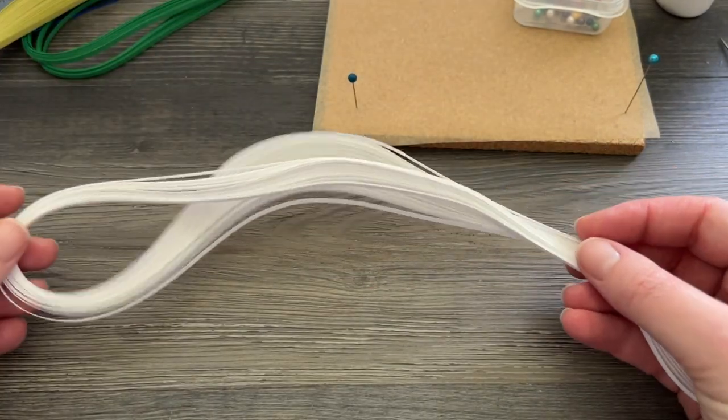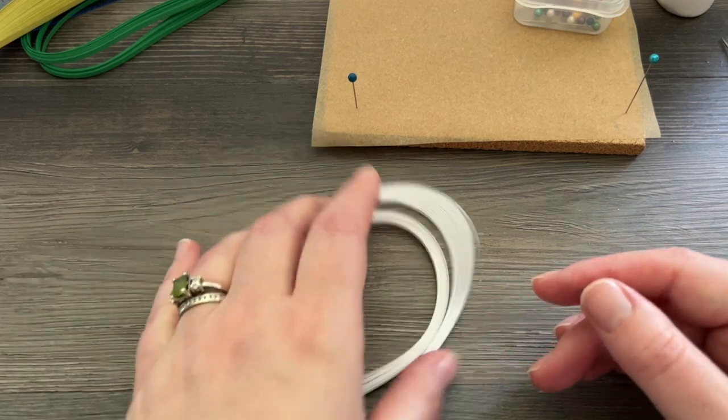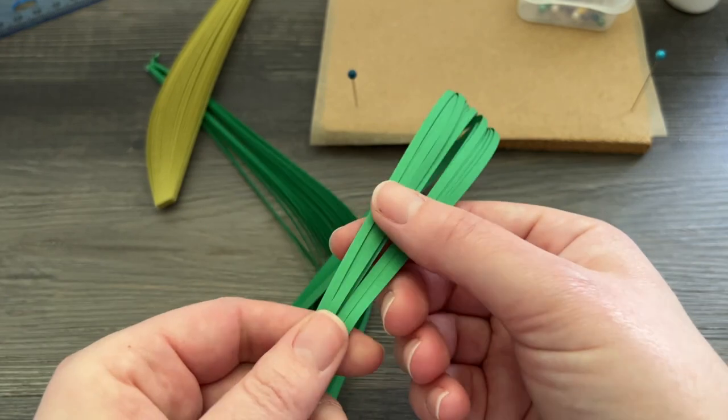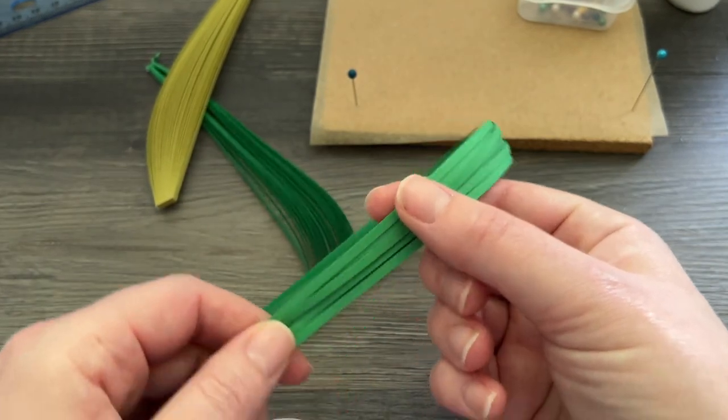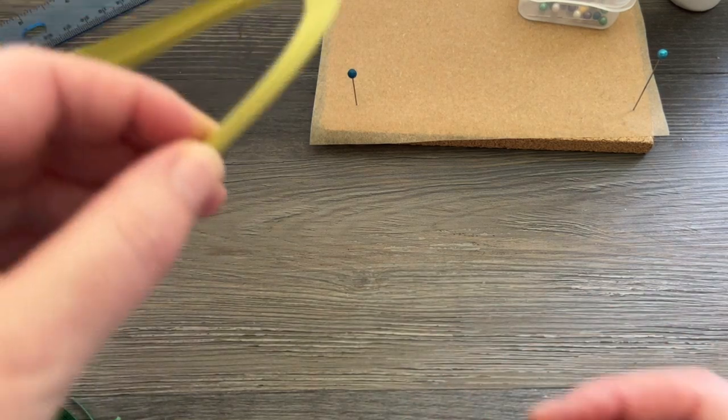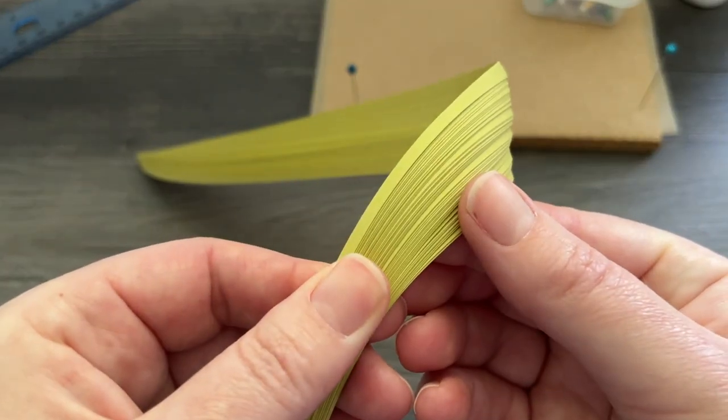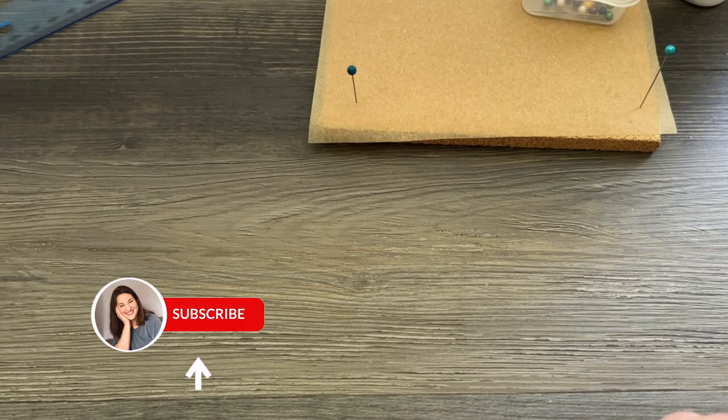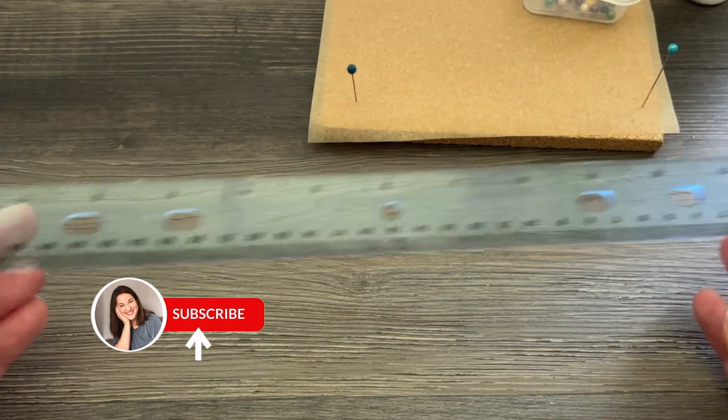We're going to be using white quilling paper strips. These are one-eighth inch wide, about 24 inches long. I also have a nice bright kelly green for making some leaves, and moss green from Quilled Creations, a nice in-between greenish yellow, for the center of our flowers.